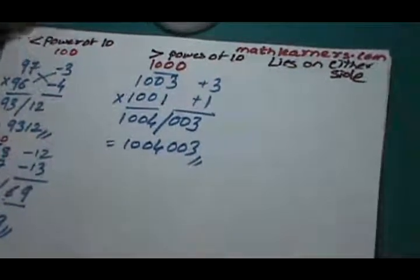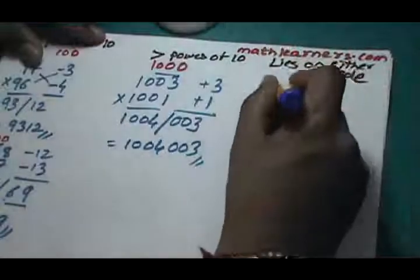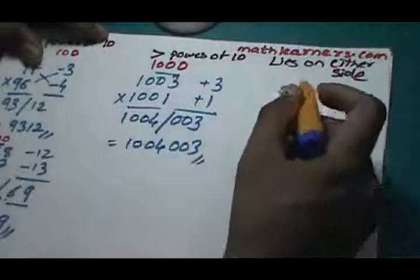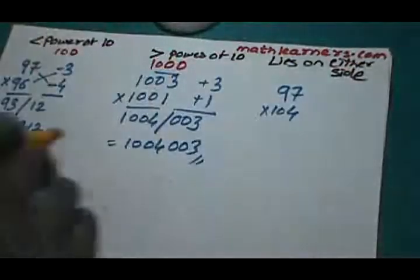Let's say suppose we want to multiply 97 and 104. Base here is 100.